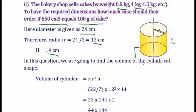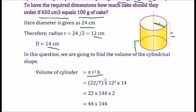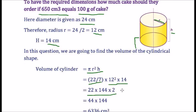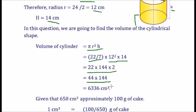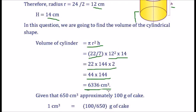In this question, we are going to find the volume of the cylindrical shape. Volume of the cylindrical shape is πr²h. That is 22/7 × 12² × 14. That is equal to 22 × 144 × 2. That is 44 × 144. That is, solving this, we get 6,336 cm cube.